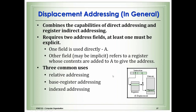Displacement addressing combines capabilities of direct addressing and register indirect addressing. It requires two address fields: at least one direct field (like a constant 'A') and one indirect field referring to a register whose contents are added to A to give the effective address of the operand. There are three common types: relative addressing, base register addressing, and indexed addressing.